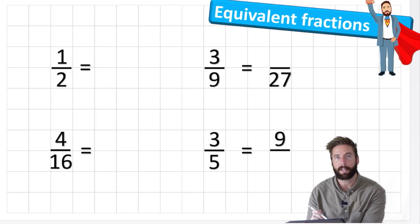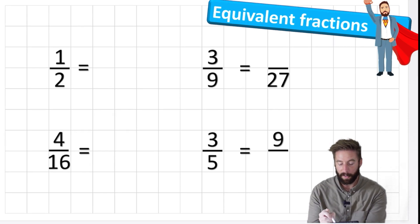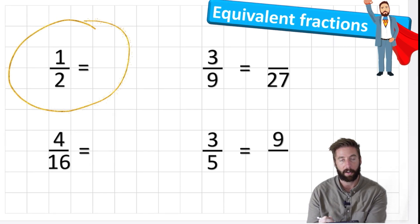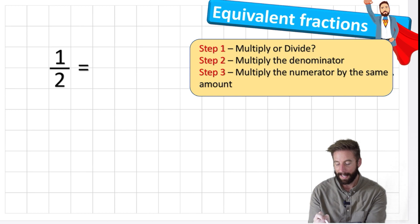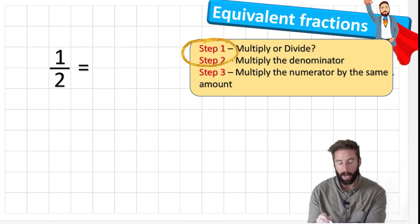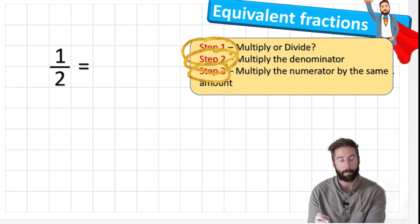Let's have a look at question one together and see what we need to do to answer it. We're going to look at this one half and try to find some equivalent fractions for it. We have three steps: step one is to multiply or divide; step two is to multiply the denominator; and step three is to multiply the numerator by the same amount.